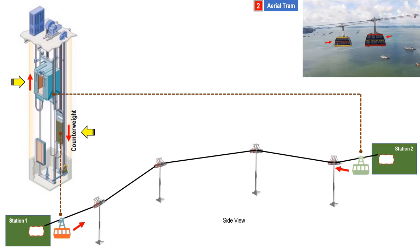In an aerial tram, the movement of the cabins are always along a slope in the same back-and-forth motion. Both are propelled by electric motors. The major difference between an elevator and aerial tram is the number of stations or stops.